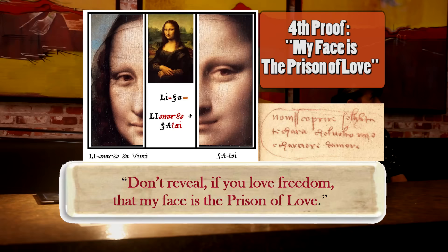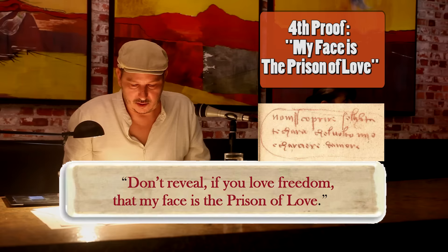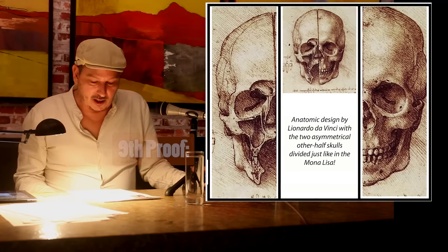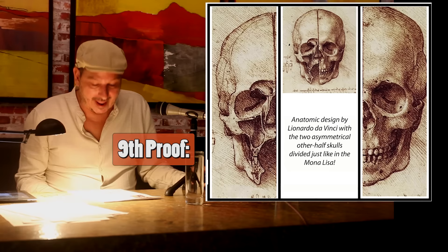His face is the prison of love between him and Salai. Don't reveal it, because their freedom is at stake in those times which outlaw erotic relationships between two males. And when Leonardo depicts the anatomy of the human skull, he also splits it into half, and both sides are clearly of a different type, just like in the Mona Lisa. The decoding of the Mona Lisa was always right in front of us.